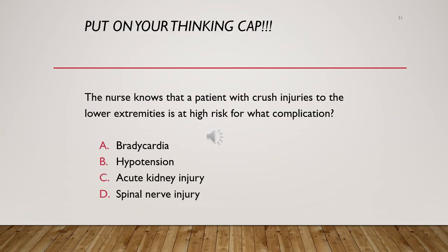Case study on crush injuries: the correct answer is C — the nurse knows that a patient with crush injuries to the lower extremity is at high risk for acute kidney injury due to rhabdomyolysis. Bradycardia would not be seen; with significant blood loss, tachycardia is expected. Hypotension occurs only with excessive blood loss. Spinal nerve injury does not typically occur with lower extremity injuries.